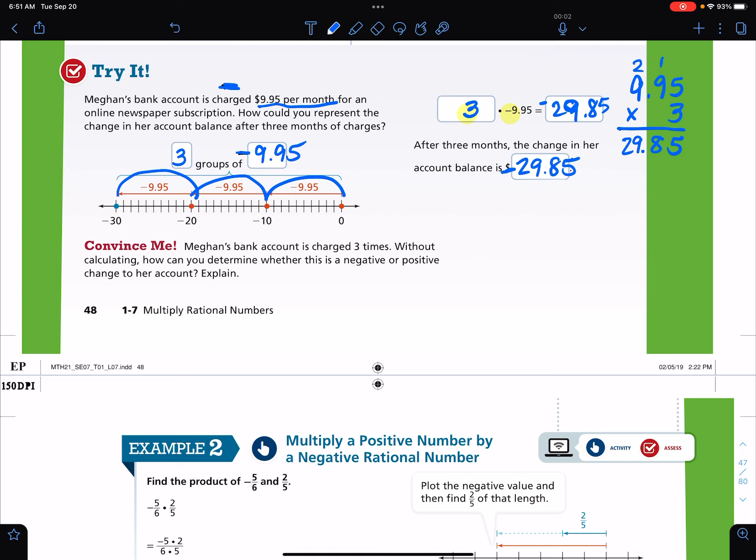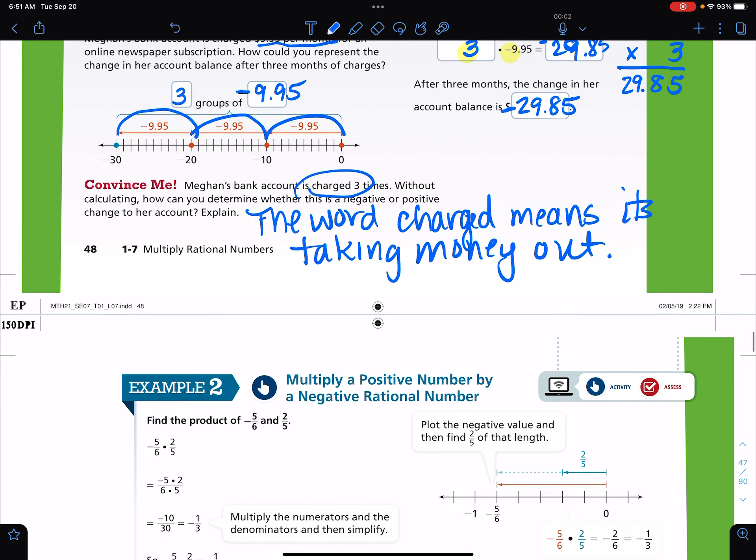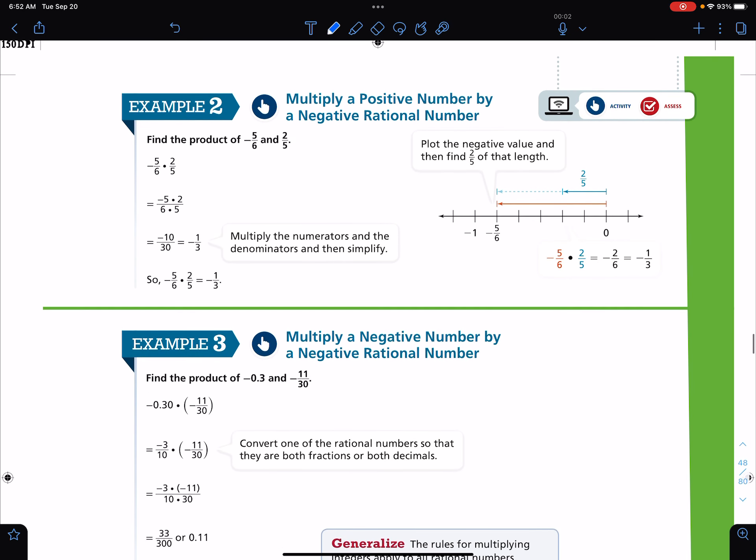Convince me. Megan's bank account is charged three times without calculating. How can you determine whether this is a negative or positive change in her account? The word charged means it's taking money out. Okay, so when you multiply with decimals, it's the exact same.